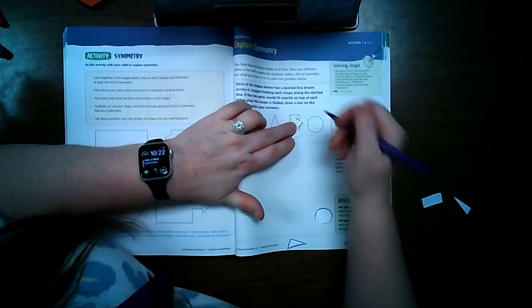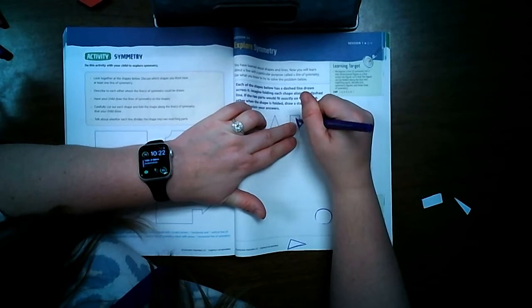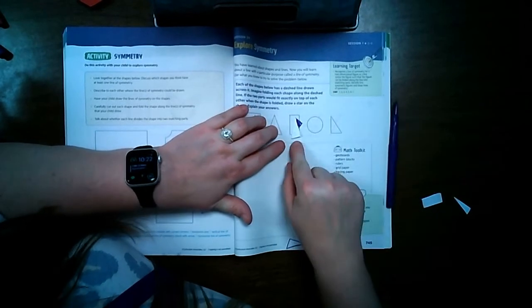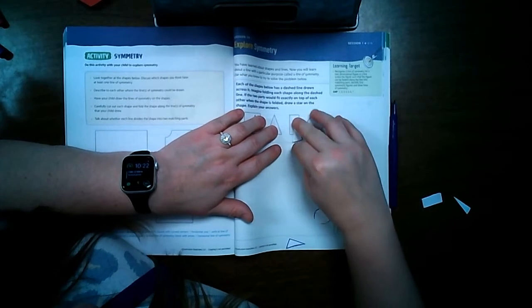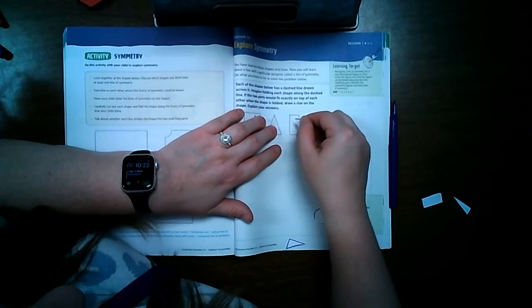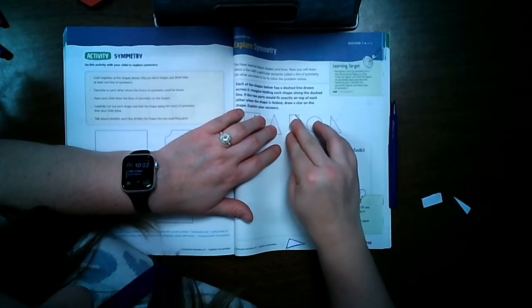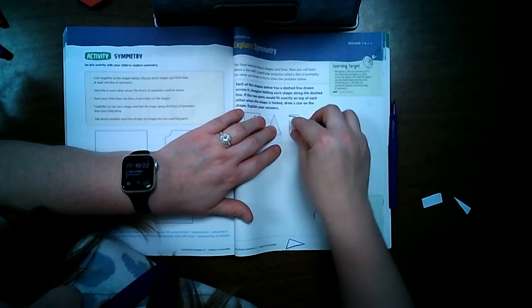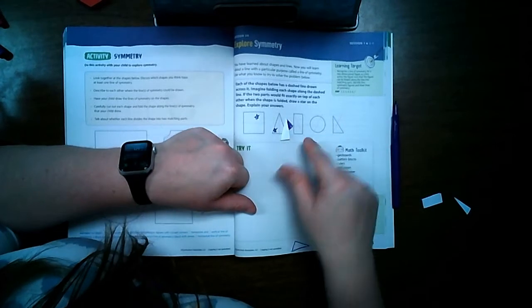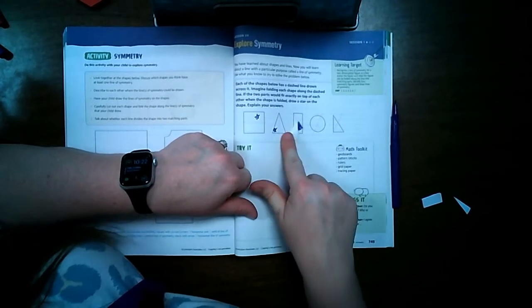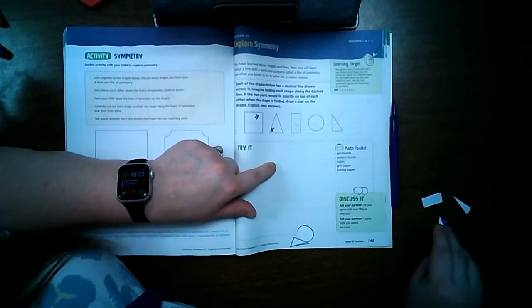Do you see how this part right here, you can see this? It's not on the folded part. That means that this shape is not folded with a correct line of symmetry. It's not, because you can see that other side there. So it is not folded symmetrically. So that one does not get a star.